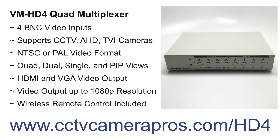Here are some of the main features of the VMHD4. It has 4 BNC video inputs, each of which can accept video from analog CCTV, AHD, and TVI type security cameras. The unit can run in NTSC or PAL video standard modes. Users can select between 4 camera, 2 camera, single camera, and picture in picture views. There is an HDMI and VGA video output.